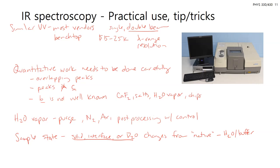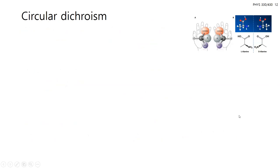That covers most of IR spectroscopy. Moving on to CD spectroscopy — there are just a couple of slides. CD spectroscopy is often used in combination with IR spectroscopy since both provide secondary structure information. CD takes advantage of the fact that almost all biomolecules are chiral — meaning their mirror image cannot be overlaid on the original, like your hands.